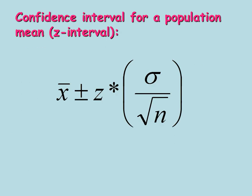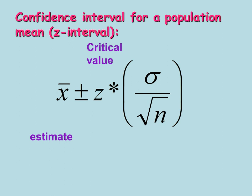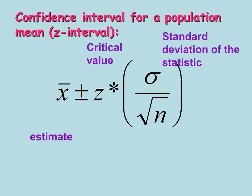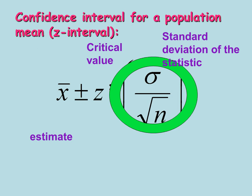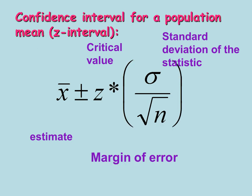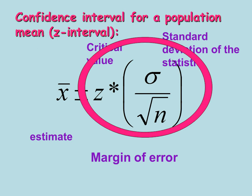This should look familiar. The confidence interval for a population mean using a z-interval: here's our estimate, here's our critical value, and there's our standard deviation of the statistic. There's our margin of error — it's your z-star times your standard deviation.